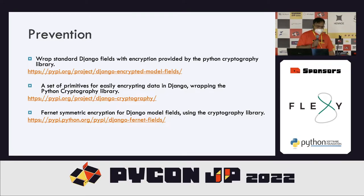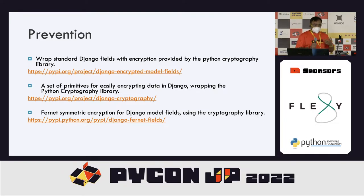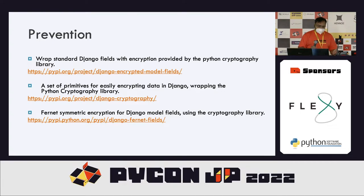To prevent cryptographic failures, you can wrap Django fields with encryption provided by the Python cryptography library. You need to make use of cryptographic library hashing algorithms, and if interested you can also implement homomorphic encryption techniques — no specific library is required since you are just exploring the properties of encryption algorithms.